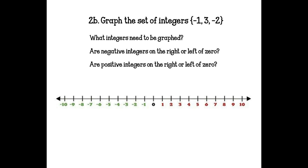2B says to graph the set of integers negative 1, 3, and negative 2. Ask yourself: what integers need to be graphed? Negative 1, 3, and negative 2. Are negative integers on the right or the left? They're on the left. So negative 1 and negative 2 go on the left side, and 3 goes on the right side as a positive.